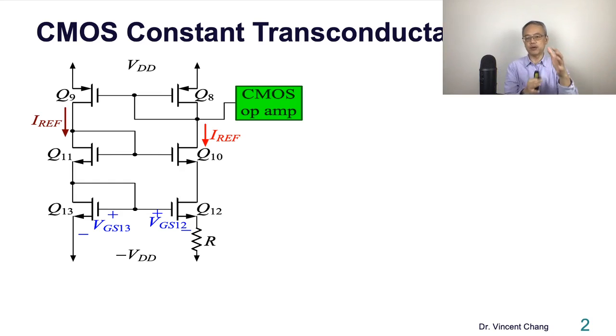For example, CMOS operational amplifier. Before I wrap up this lecture, I just Googled to see what's out there. I encourage you to stop, just Google constant gm bias or constant transconductance bias - you will see a lot of pop-up including this one.